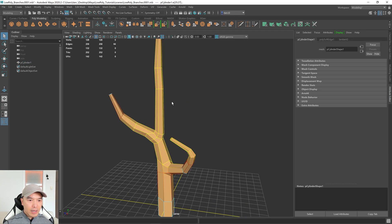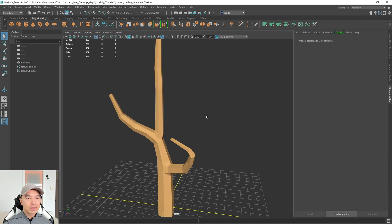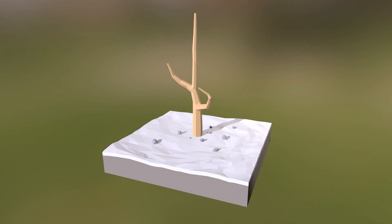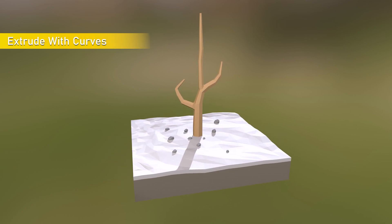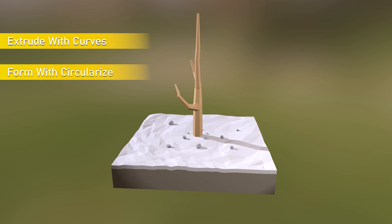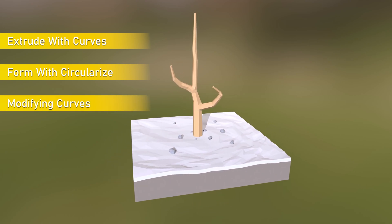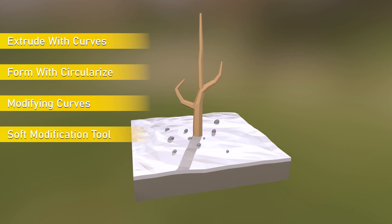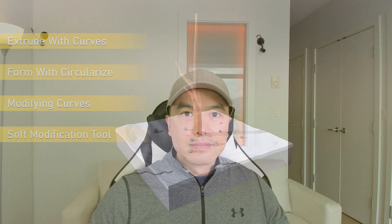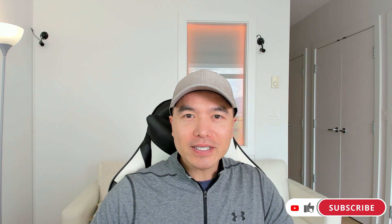Now let's take a look. Here is our low poly tree. I'll turn off wireframe on shaded — looks pretty good. Let's select it and harden these edges: mesh display, harden edge. I'm still in soft selection so I'll press B on the keyboard to turn that off. So let's do a quick recap of what we covered today: we learned to extrude the branches using curves, how to give them extra form with the circularize feature, how to modify the curve points to get our initial shape, and finally how to use the soft modification tool to add finishing touches. And that's how you model some low poly branches in Maya. Hopefully you enjoyed this tutorial — we'll see you in the next one. This has been Digital Dreambox, your destination for game art.